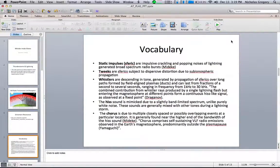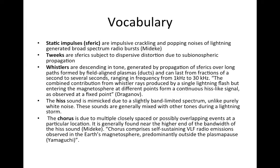Some of the vocabulary we'll be using includes spherics, which are impulsive crackling due to broad-spectrum radio bursts. Tweaks are spherics subject to dispersive distortion due to subionospheric propagation. Whistlers are specifically important because they're the ones we hear descending in tone, meaning different frequencies show up at different times in the other hemisphere. They range between 1 and 30 kHz. Hiss and chorus sounds are also found due to different reasons.